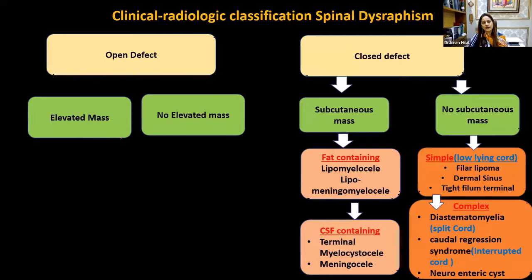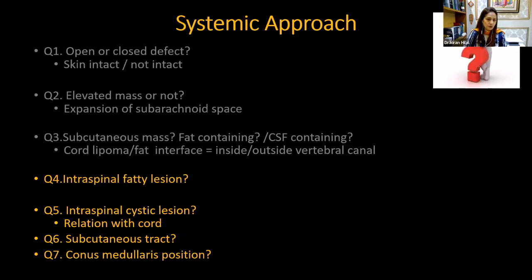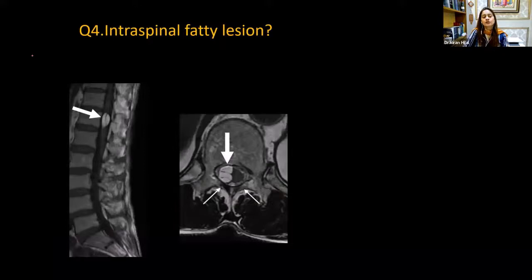We have now discussed the closed defect with subcutaneous masses — both fat-containing and CSF-containing. Now we are left with the closed defect with no subcutaneous mass. In these cases, you may be dealing with a simple low-lying cord with a filum lipoma, dermal sinus, or diastematomyelia. Coming to question four: in the closed defect with no subcutaneous mass, do you have any intraspinal fatty lesion?